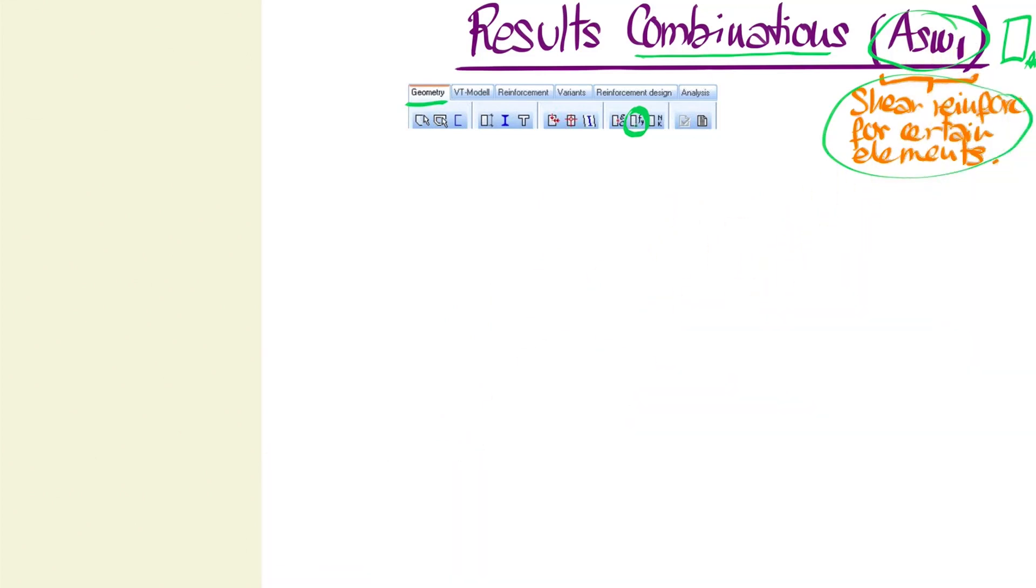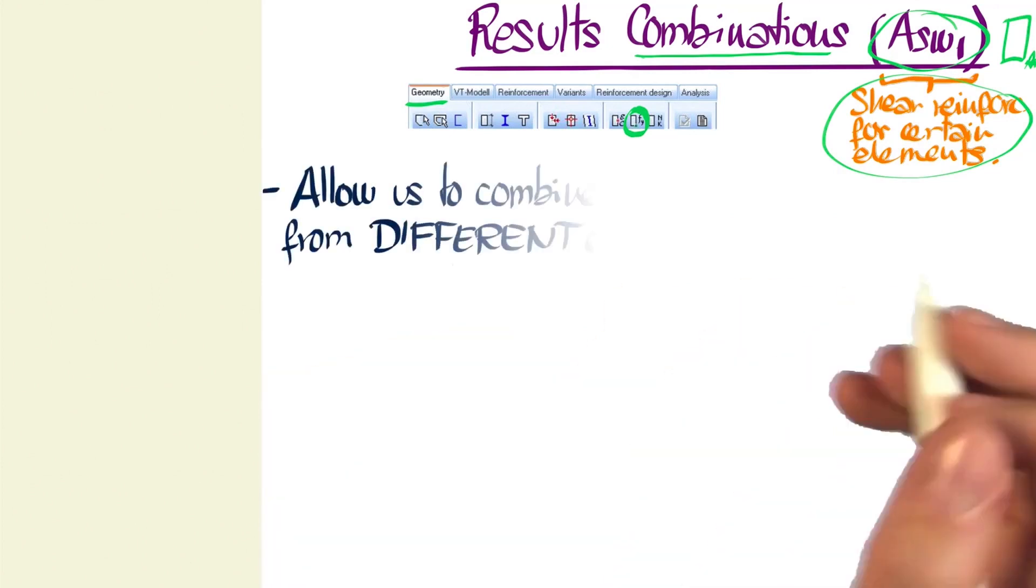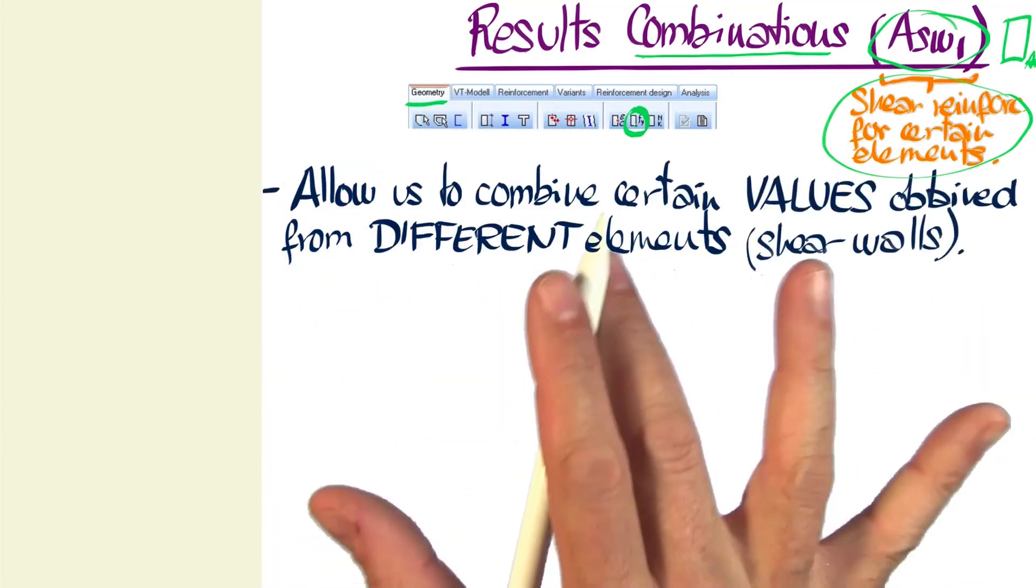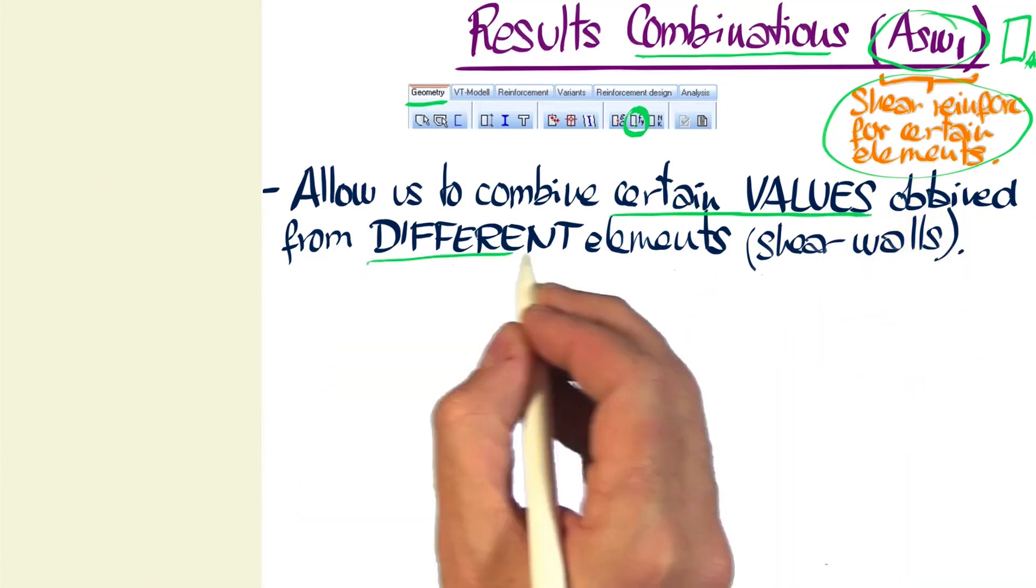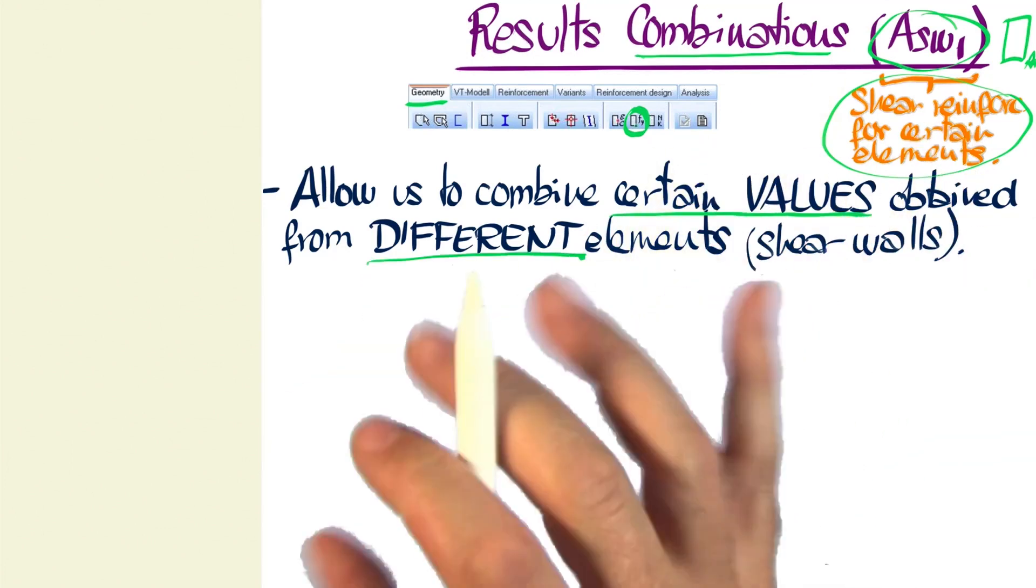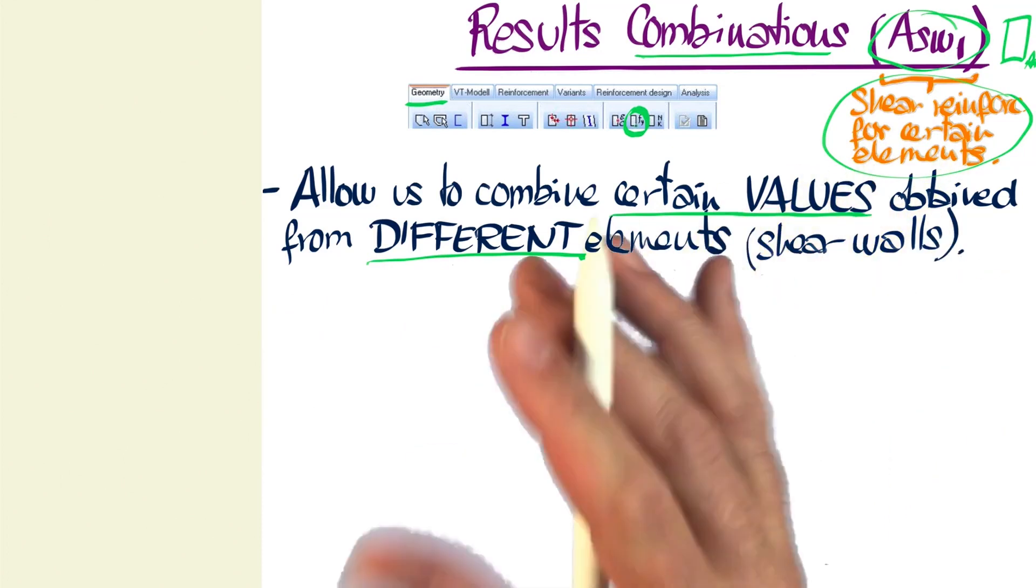But what are these result combinations used for? Well, they allow us to combine certain values obtained from different result points. If you recall, we discussed result points in depth when we explained the Fagus interface.